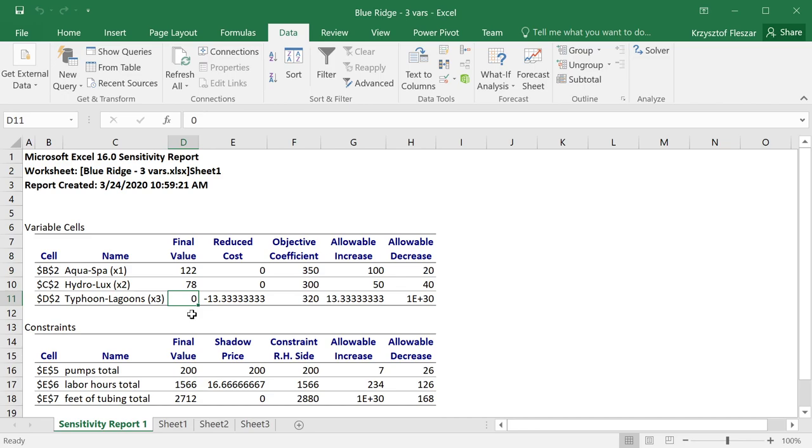So you see, reduced costs are zero always when the decision variables are not set to their limits, in this case, lower limits zero. And reduced cost has a meaning when a decision variable is at a limit, in general, at a lower limit or an upper limit for this decision variable. Now, we don't have upper limits here. We don't have maximum Typhoon Lagoons we can produce, but we have a lower limit of zero, and the reduced cost minus $13.33 tells us why it is zero. So a reduced cost is kind of a negation of a trigger price change for the objective coefficient. If this objective coefficient for Typhoon Lagoons improved by more than $13.33, the product would become profitable.